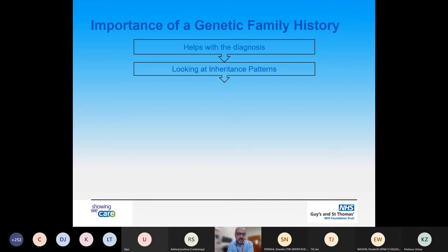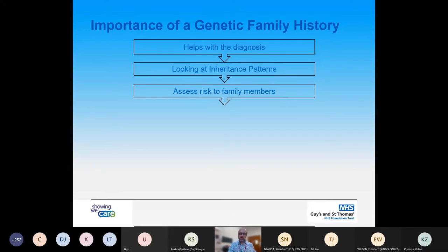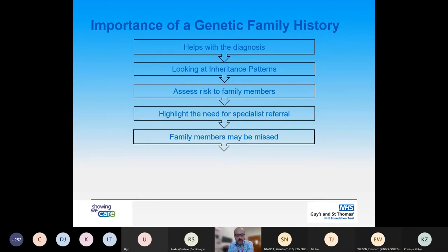It also helps us look at inheritance patterns — recognising whether there is a specific pattern of inheritance in the family and identifying the type of inheritance. Within inherited cardiac conditions, this allows us to look at the risk to other family members and plan and possibly recommend cardiac screening. In addition, it allows us to identify other family conditions such as cancers, neurological and metabolic conditions, that may require referral to other specialised genetic services. There may also be family members who are undocumented or missed from the family history, and we need to consider the implications of the risk posed to those individuals, especially regarding cardiac screening.